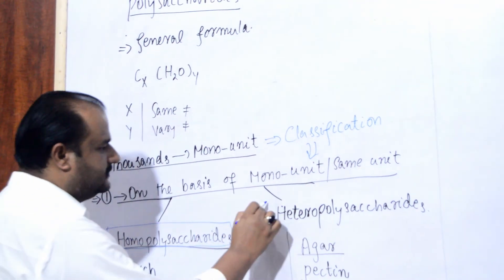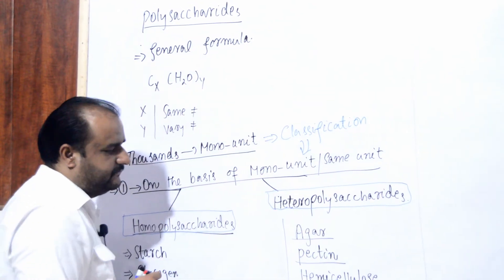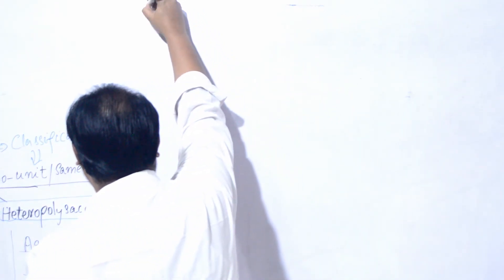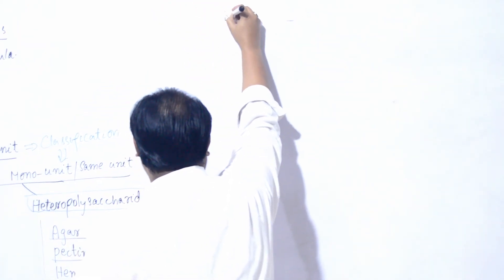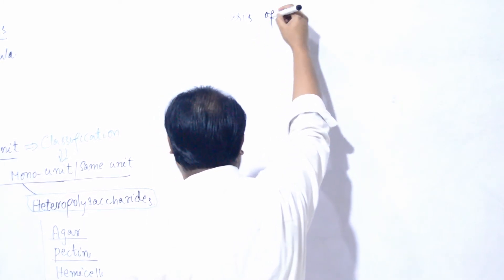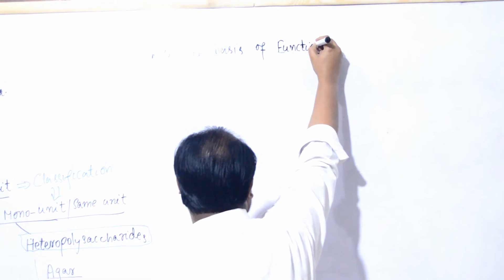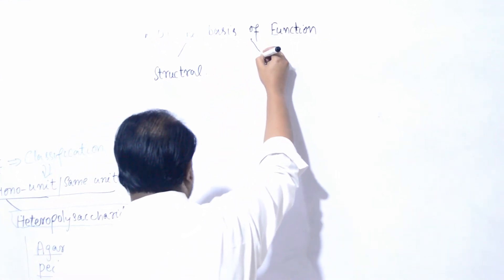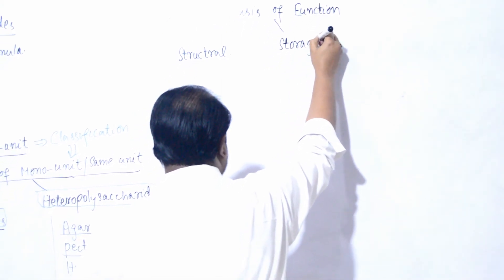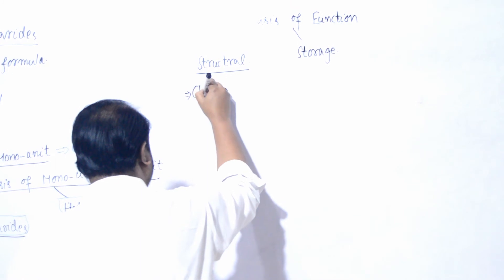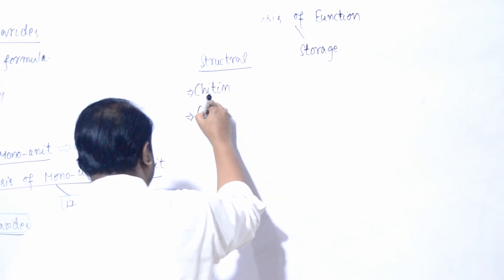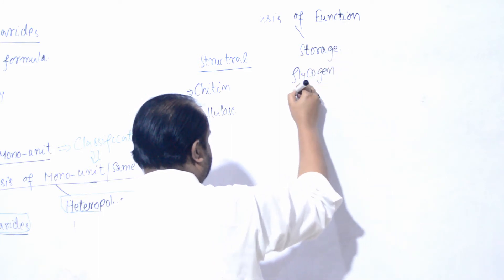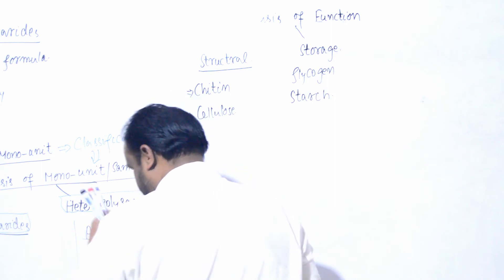Further classification hum karte hain on the basis of their function. Kuch structural hote hain, aur kuch storage hote hain. Agar hum structural ki baat karein, toh important MCQ ke liye: chitin aur cellulose structural hain. Storage ki baat karein toh glycogen aur starch hain. Yeh on the basis of their function ho gaya. Sabse pehle student hum log study karte hain starch ko.